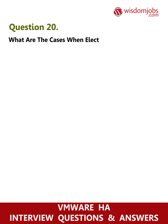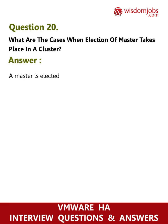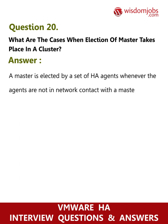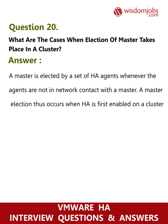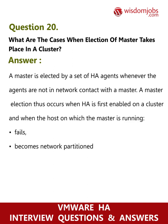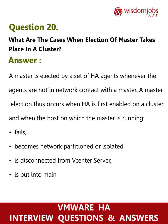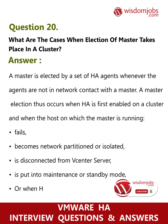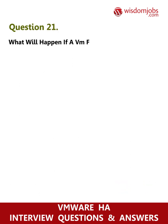Question 20: What are the cases when election of master takes place in a cluster? Answer: A master is elected by a set of HA agents whenever the agents are not in network contact with the master. A master election occurs when HA is first enabled on a cluster, and when the host on which the master is running fails, becomes network partitioned or isolated, is disconnected from vCenter Server, is put into maintenance or standby mode, or when HA is reconfigured on the host.